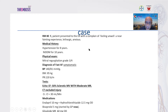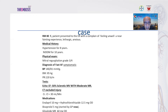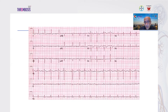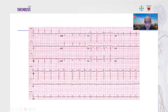This is a very complicated, very high-risk patient: old age, hypertension, diabetes, and chronic renal impairment. This is her ECG showing atrial fibrillation. When you see a patient like this in the ER, you must ask yourself several important questions.